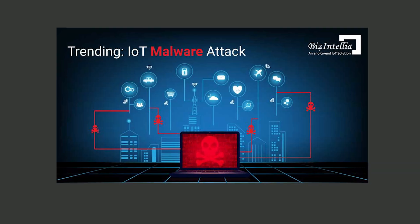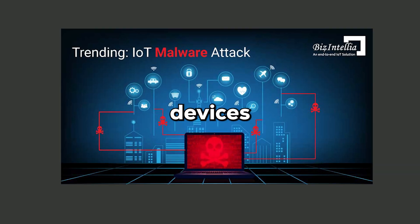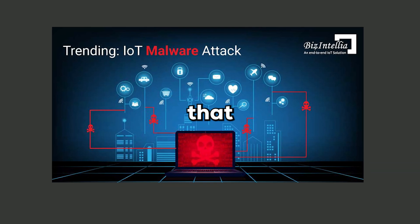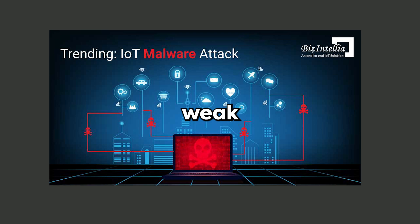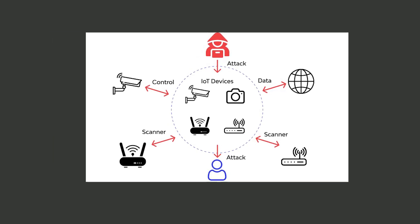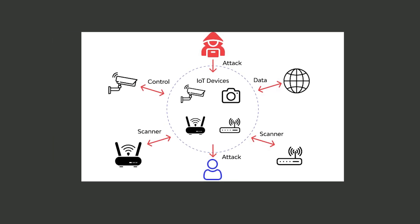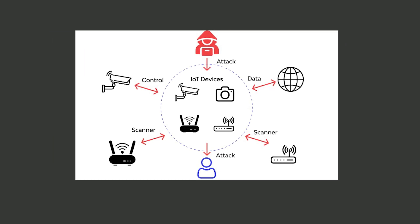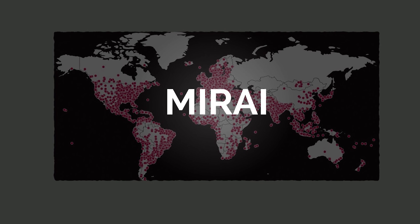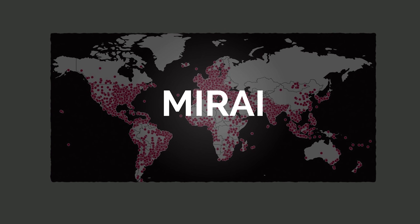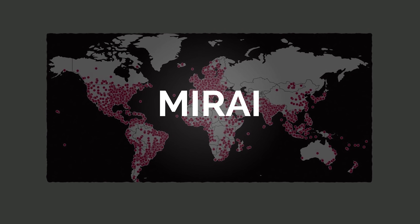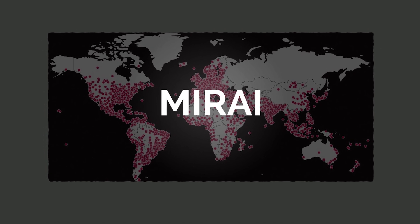IoT malware targets smart devices — from home cameras to thermostats — that often have weak security measures. By compromising these devices, attackers can create botnets or spy on your activities. The Mirai botnet, which infected millions of IoT devices to launch massive DDoS attacks, is one of the most infamous examples.